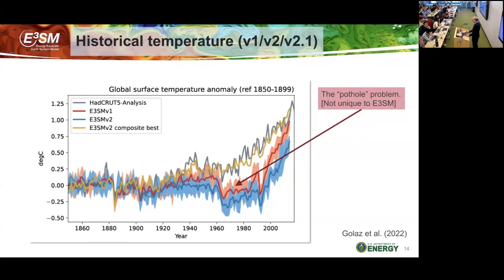Now, one of the challenges in V1, V2, and V2.1 — what we call the 'pothole problem.' The historical temperature record from HadCRUT v5 is shown in gray. E3SM versions 1, 2, and 2.1 were unable to capture a realistic rendering of historical temperature warming. The warming was basically non-existent until the late 1990s, and then excessively large — it kind of looks like a pothole. This is how it has become known in the community. This was one of the major problems in all previous versions of the model, going to the credibility of the model, so we put very large emphasis on solving it for V3.